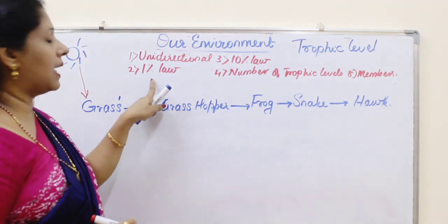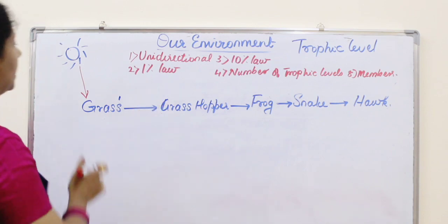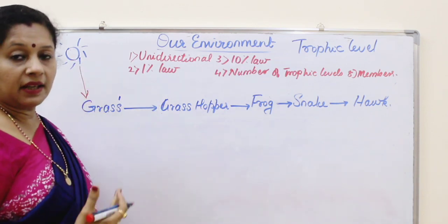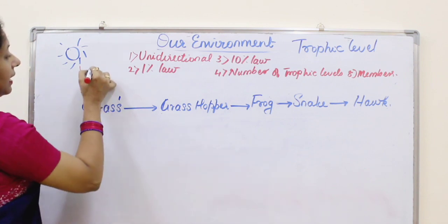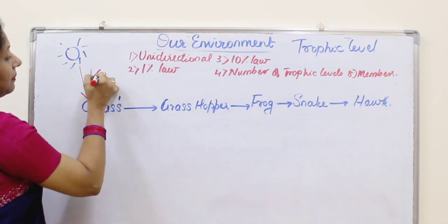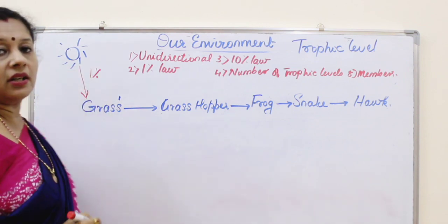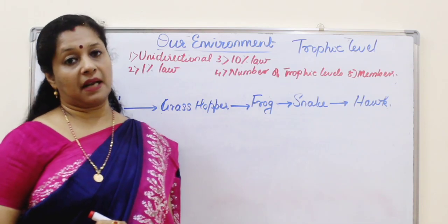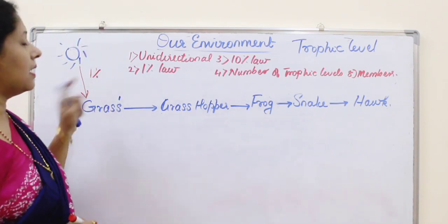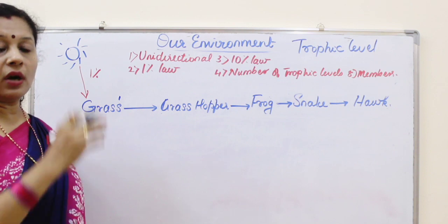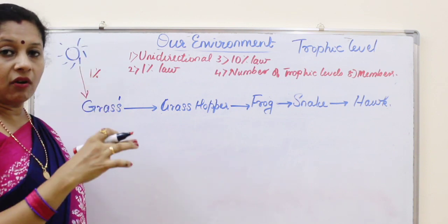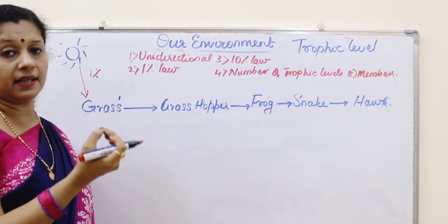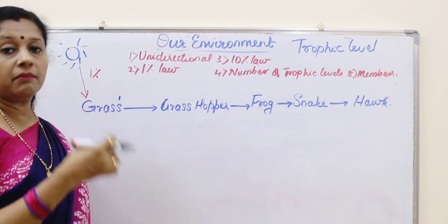The second point is the one percent law. Sunlight is available to all plants, but even then only one percent of the sun's light energy can be utilized by the green plants. So the leaves utilize only one percent of the solar energy falling on them for making food. This is called the one percent law.